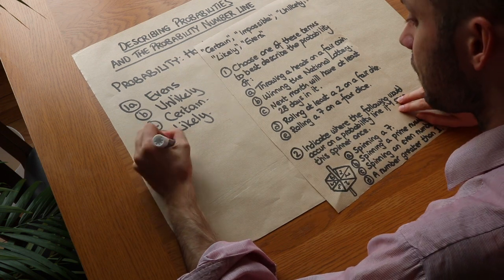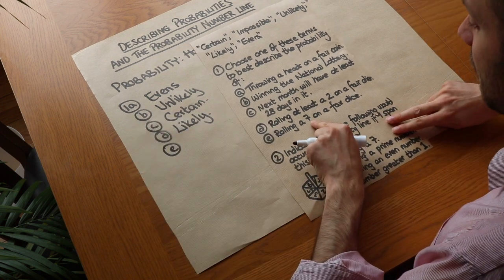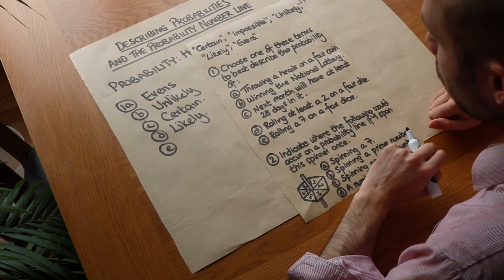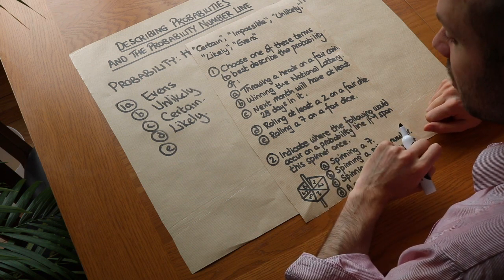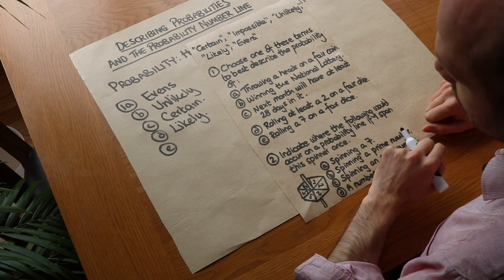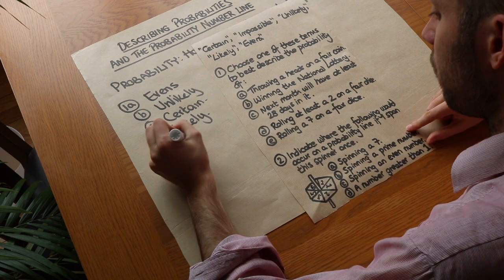And then finally, with E, rolling a 7 on a fair dice. Well, you only get up to 6 on a dice, don't you? So it's absolutely impossible that we're going to roll a 7. So we write impossible.